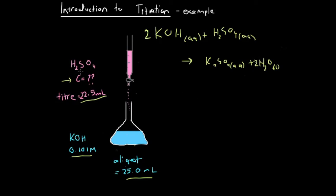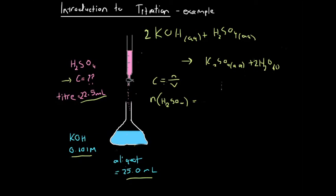What we want to know is the concentration of the sulfuric acid. Concentration equals moles divided by volume. We've got the volume of sulfuric acid — that's the titar volume — so what we need to work out is the moles of sulfuric acid. We'll use stoichiometry with this equation: for every two potassium hydroxides, one sulfuric acid molecule reacts, so the moles of sulfuric acid will be half the moles of potassium hydroxide.